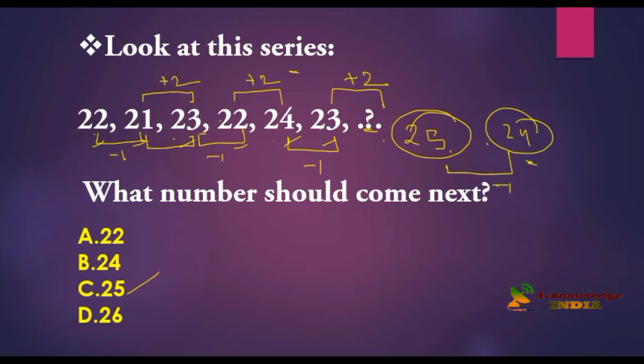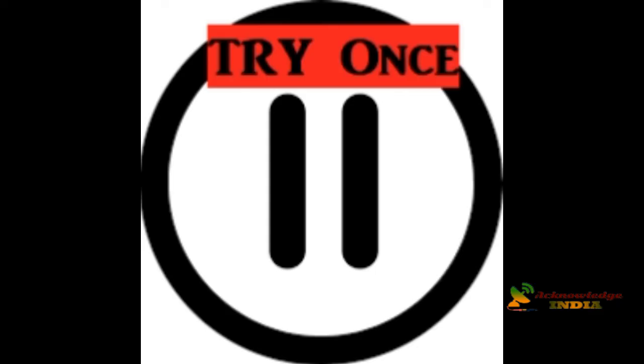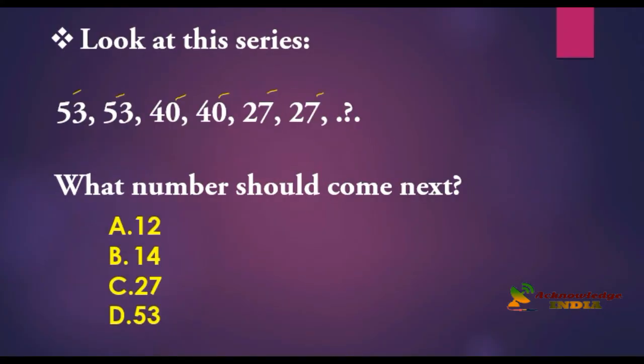So the next series is 53, 53, 40, 40, 27, 27, and what next? If you are observing, these two numbers, 53, 53 are repeating, and 40, 40 is repeating, 27, 27 is repeating. So there is a logic in this. What is the logic?